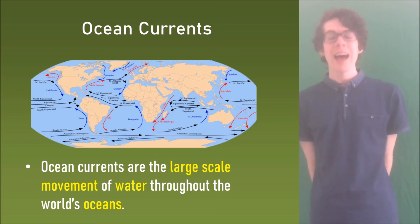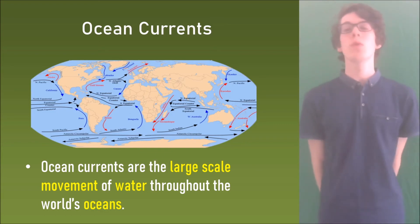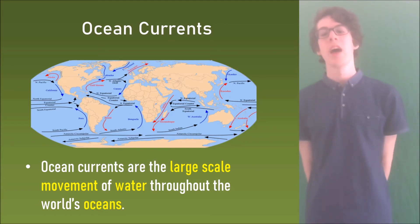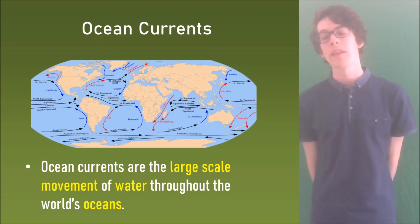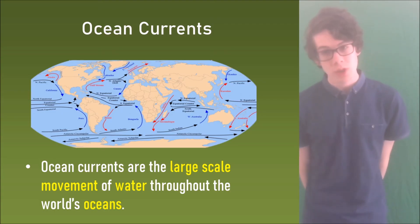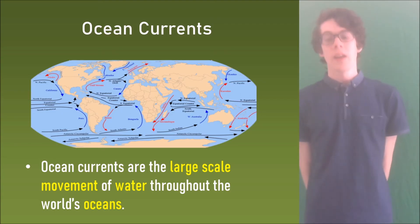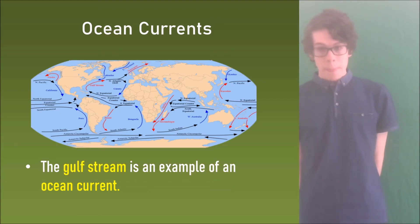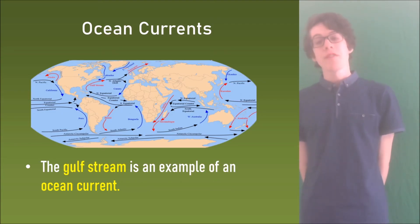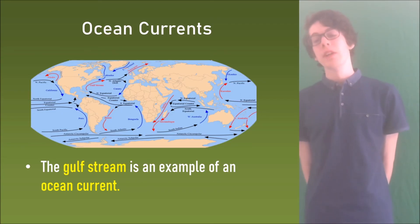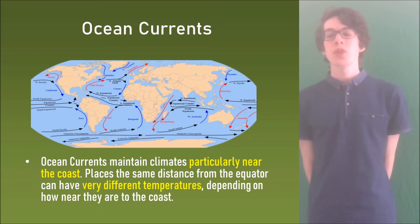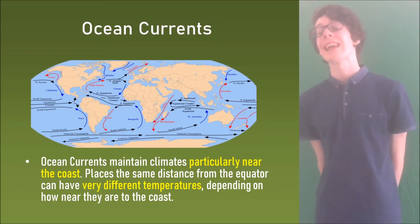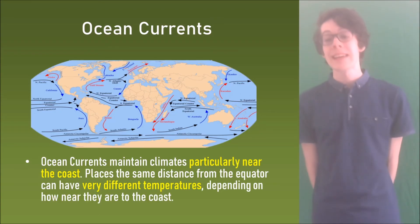Finally, ocean currents. Ocean currents are the large-scale movement of water throughout the world's oceans. The Gulf Stream is an example of an ocean current, and ocean currents maintain climates, particularly near the coast.